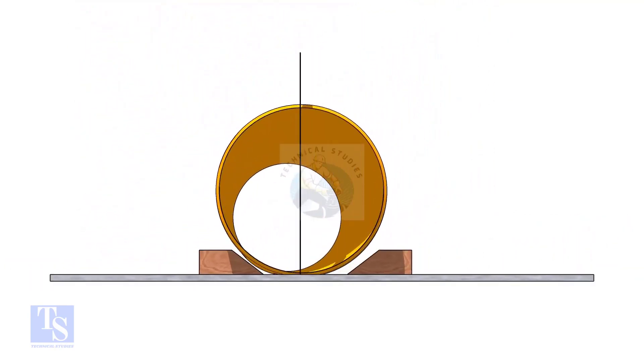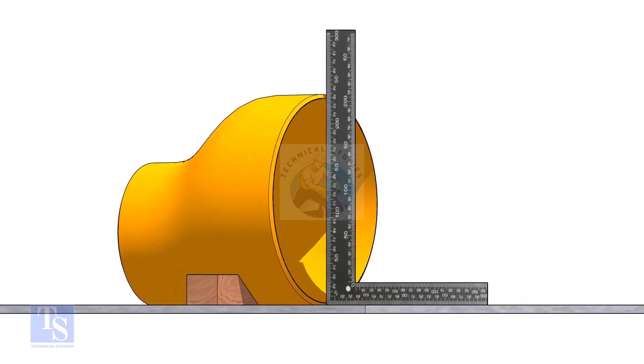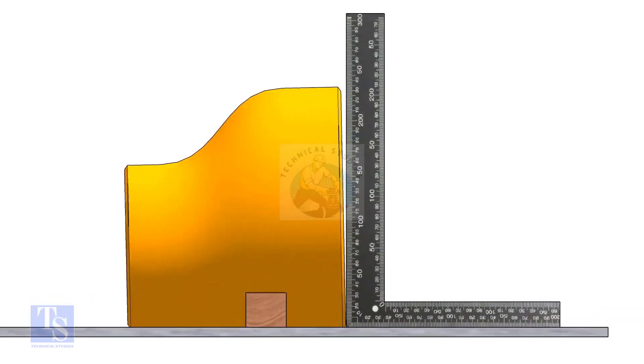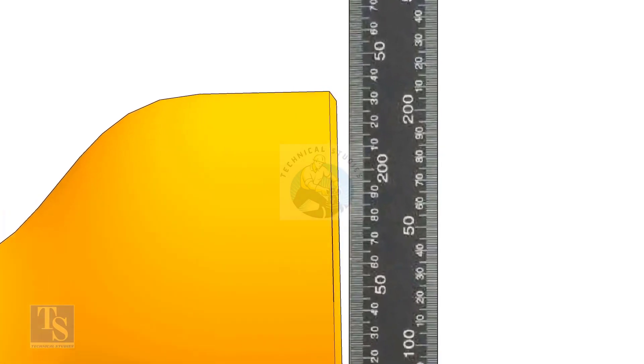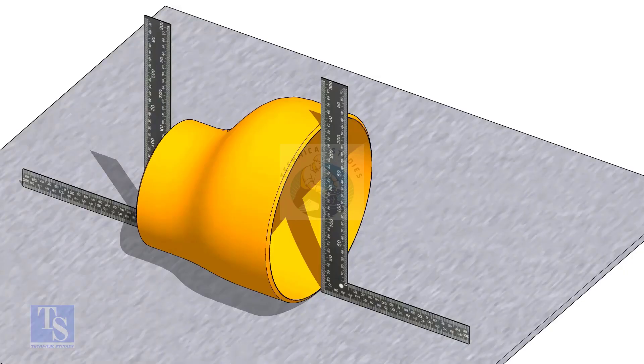Put the reducer on a level plate and check the squareness with a right angle. You will see a gap between the right angle and the reducer. Slowly rotate the reducer clockwise and anti-clockwise.